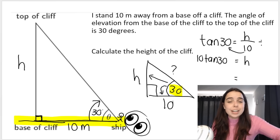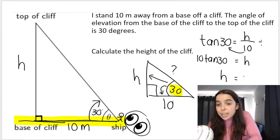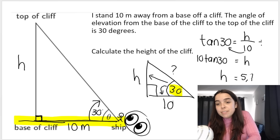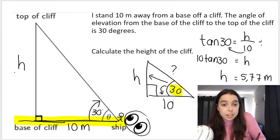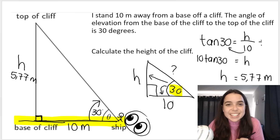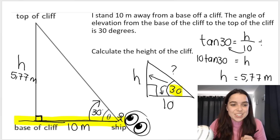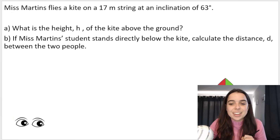Type that into your calculator and we get 5.77 meters — that's the height of the cliff. Easy. Let's do another one together.